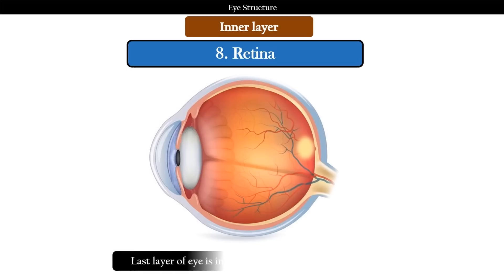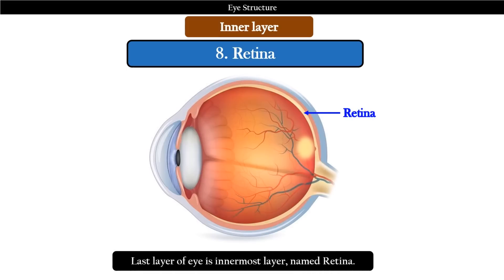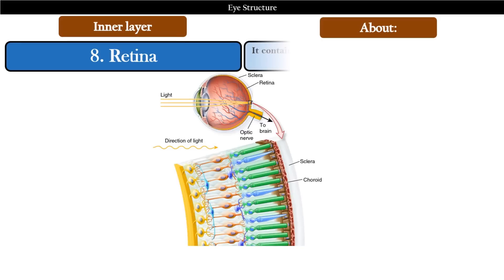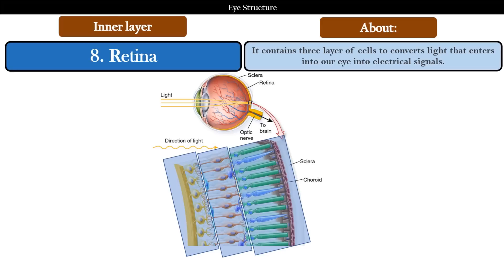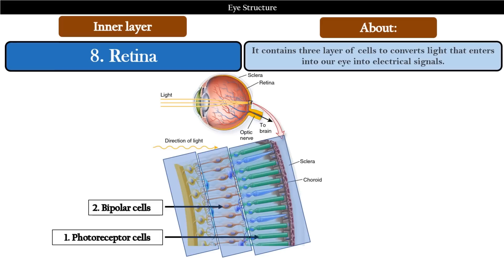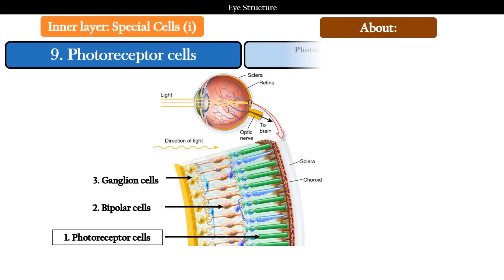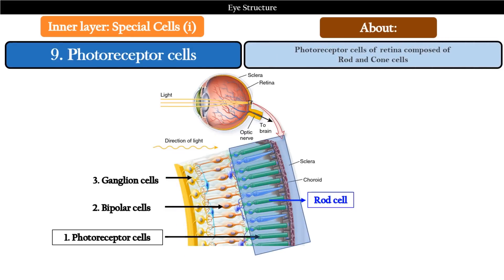The last layer of the eye is the innermost layer, named retina. It contains three layers of cells to convert light that enters into our eye into electrical signals. They are photoreceptor cells, bipolar cells, and ganglion cells. The photoreceptor cells of the retina are composed of rod and cone cells.